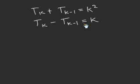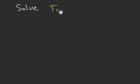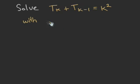For now, let us try and see if we can solve the first equation: T sub k plus T sub k minus 1 equal k square with the initial value T sub 1 equal 1. It's easy to see that since T sub k plus T sub k minus 1 equal k square, then T sub k must be represented by a polynomial of second degree.